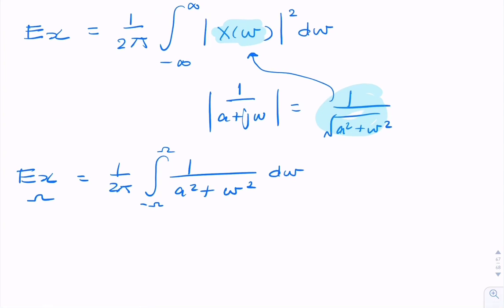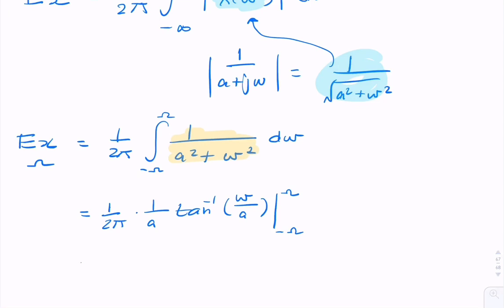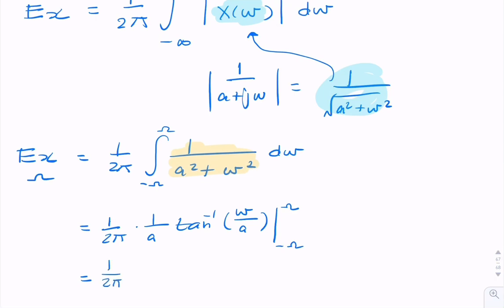Now, this is a standard integral for which we can use a standard result. So we're allowed to use the result that this is 1 over 2 pi times 1 over a tan inverse (omega over a) between minus omega and omega. And if we substitute the limits, that's 1 over 2 pi a times the inverse tangent of uppercase omega over a minus tan inverse of minus omega over a.